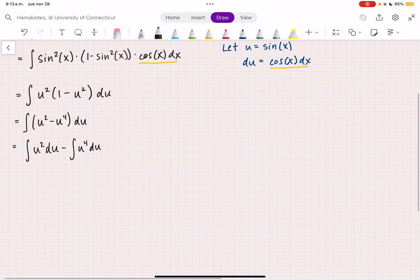Now I can integrate this, and I have u cubed over 3 minus u to the fifth over 5 plus c.